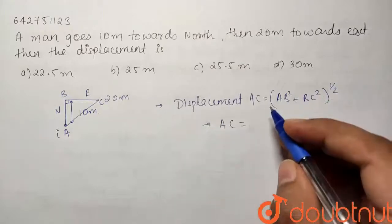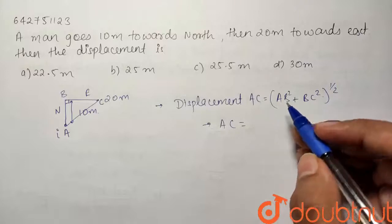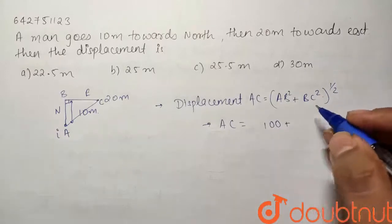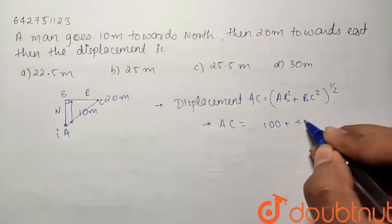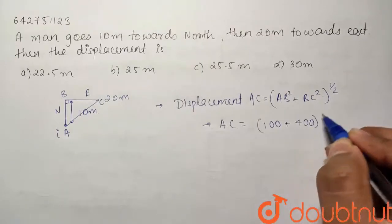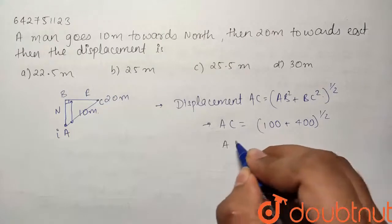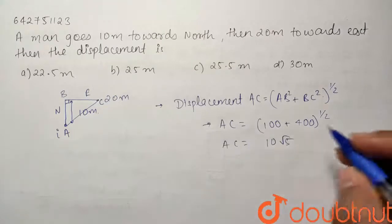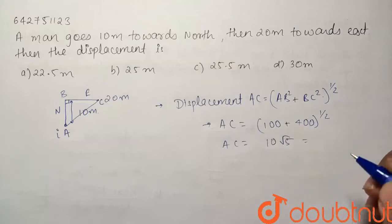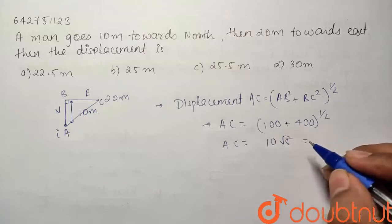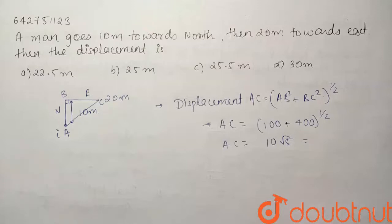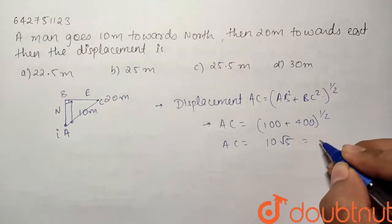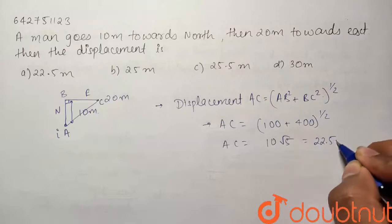my value of AC comes out to be AB square, which is equal to 100, plus BC square, which is equal to 400, to the power half. So our AC comes out to be equal to 10 under root 5. This is approximately equal to... we know that root 5 is approximately 2.25. So our AC comes out to be equal to 22.5 meters.